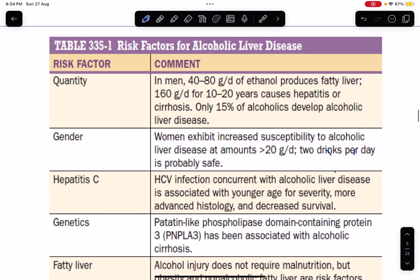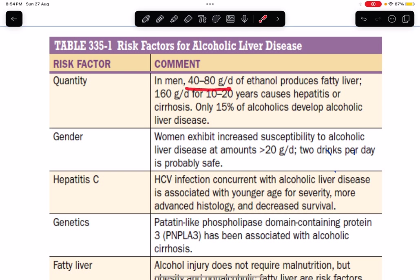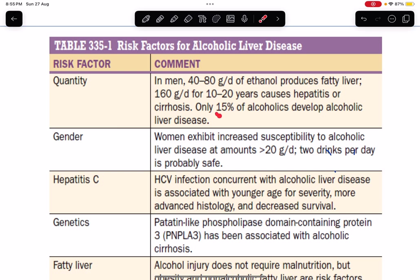Now, what are the risk factors of alcoholic liver disease? Regarding quantity of alcohol, intake should be sustained for almost 10 to 20 years for the development of alcoholic hepatitis or cirrhosis. In men, 40 to 80 grams per day of ethanol produces fatty liver, and 160 grams per day for 10 to 20 years causes hepatitis or cirrhosis. Only 15% of alcoholics develop alcoholic liver disease.